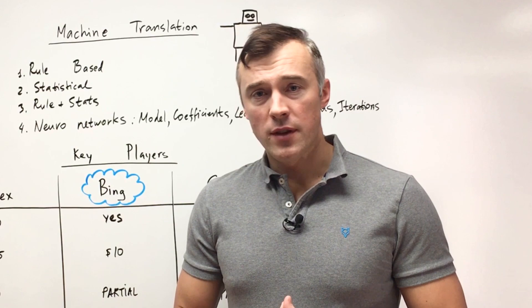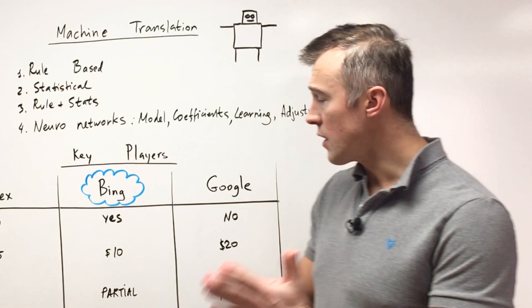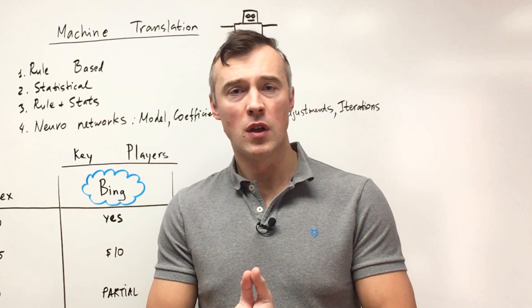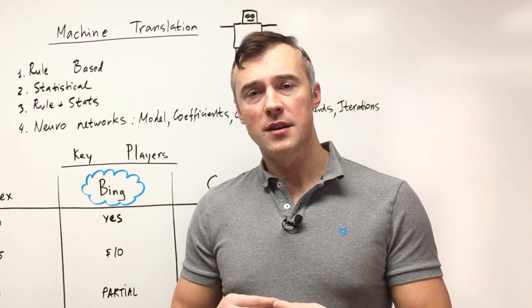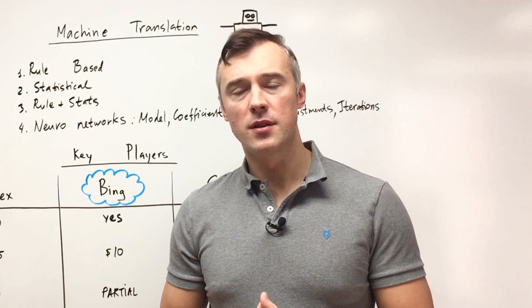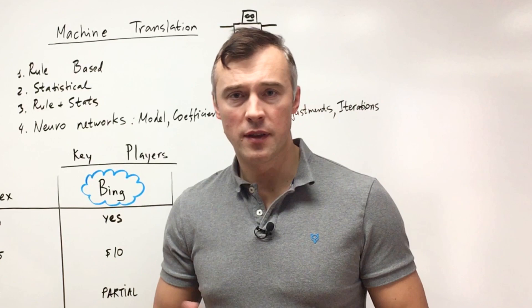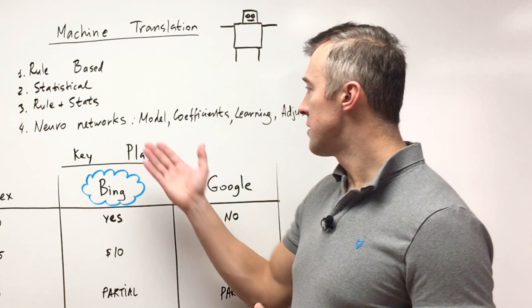Briefly, to give you a gist of what these neural networks are — they work the same way the human brain works. There are dendrites that transmit electrical signals; the signals in parts of the brain form connections and submit different signals. In the end, your brain makes a decision: yes or no. This is what it ultimately comes down to.